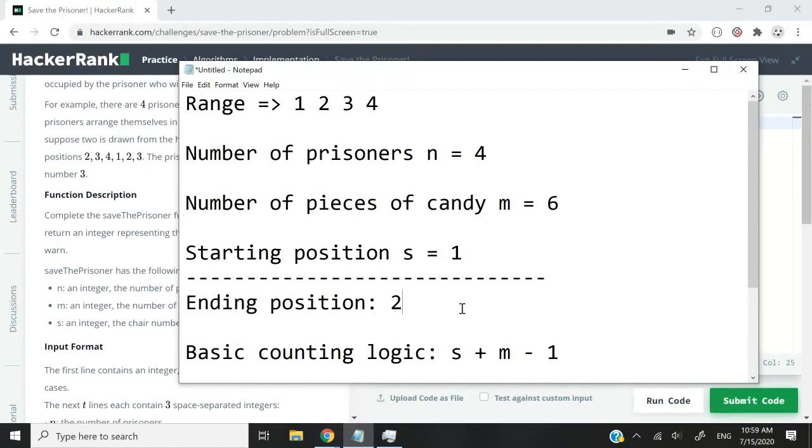Now what is the basic counting logic here? How do we know it's position number two? We can simply have this formula: s plus m minus one. Why does this even make sense? Let's say n equals four and we have only two pieces of candy. We start at position one. Position one gets a candy, position two gets a candy. So it's one and two. If s equals two, the starting position, then we get one, two. If s equals three, we get one, two like this. So the starting position is included when we count. That's why we need to add minus one. It's like when you count an array because it's zero-based, you need to deduct one to get the index of the last element. The idea here is the same.